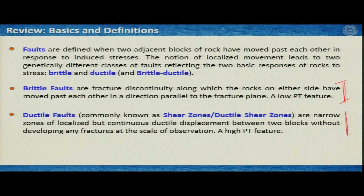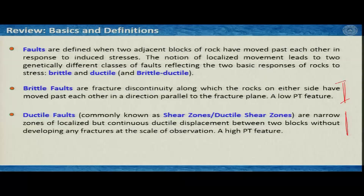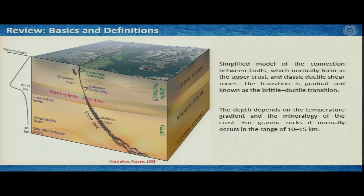There are two terms you may be aware of: faults and shear zones. A brittle fault is where two blocks moved past each other producing fractures in between. Whatever was not a fault was categorized as a shear zone. Ramsay in 1980 came out with the classification that everything we can imagine in terms of localized deformation are faults — brittle faults, brittle-ductile faults, and ductile faults. Ductile faults are also known as shear zones or ductile shear zones, and that is exactly what we are going to learn today.